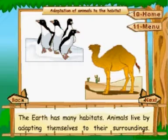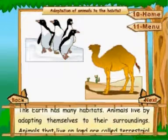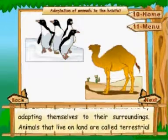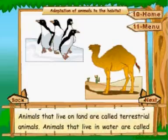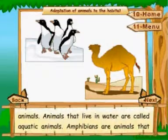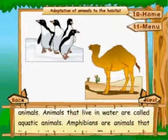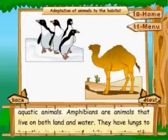Adaptation of animals to the habitat. The earth has many habitats, and animals live by adapting themselves to their surroundings. Animals that live on land are called terrestrial animals. Animals that live in water are called aquatic animals.